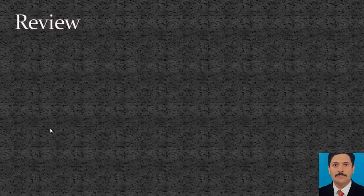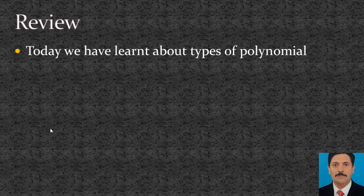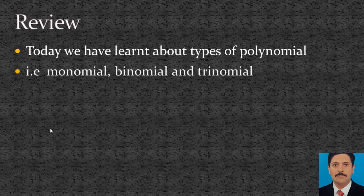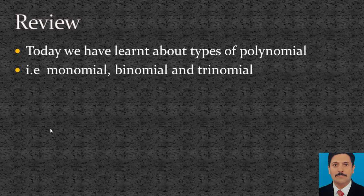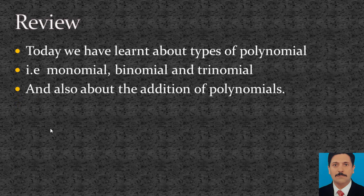Now we revise. Today we have learned about the types of polynomials: monomial, binomial, and trinomial. In monomial, the polynomial contains only one term; binomial contains two terms; trinomial contains three terms. We also learned about the addition of polynomials — in addition, we add the coefficients of like terms.